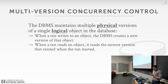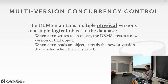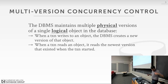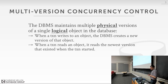Every single time a transaction updates an object, it's going to make a new version. The way to think about this is that we're going to have the distinction between logical versions and physical versions. There will be a logical tuple that only has one logical version — from the application standpoint, if you want to read the tuple with key A, you only see that one tuple. But underneath the covers, the database system is going to maintain multiple physical versions for that single logical object.